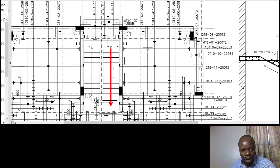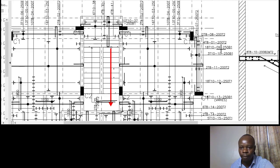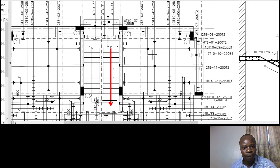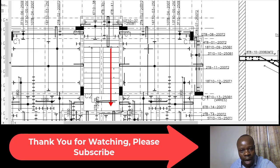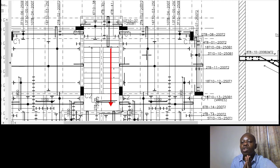Wherever the annotation has been indicated, follow it through until where it meets a perpendicular line. At the point where there is that small dark circle, that is where the reinforcement bar is indicated. So whenever you find an annotation like '18 t10 09 250 b1', the line below it is an identification line — it is not the reinforcement bar. To get the reinforcement bar, follow the identification line straight, and the line that it is perpendicular with is the reinforcement bar. The small dark circle is that reinforcement bar passing across perpendicularly.